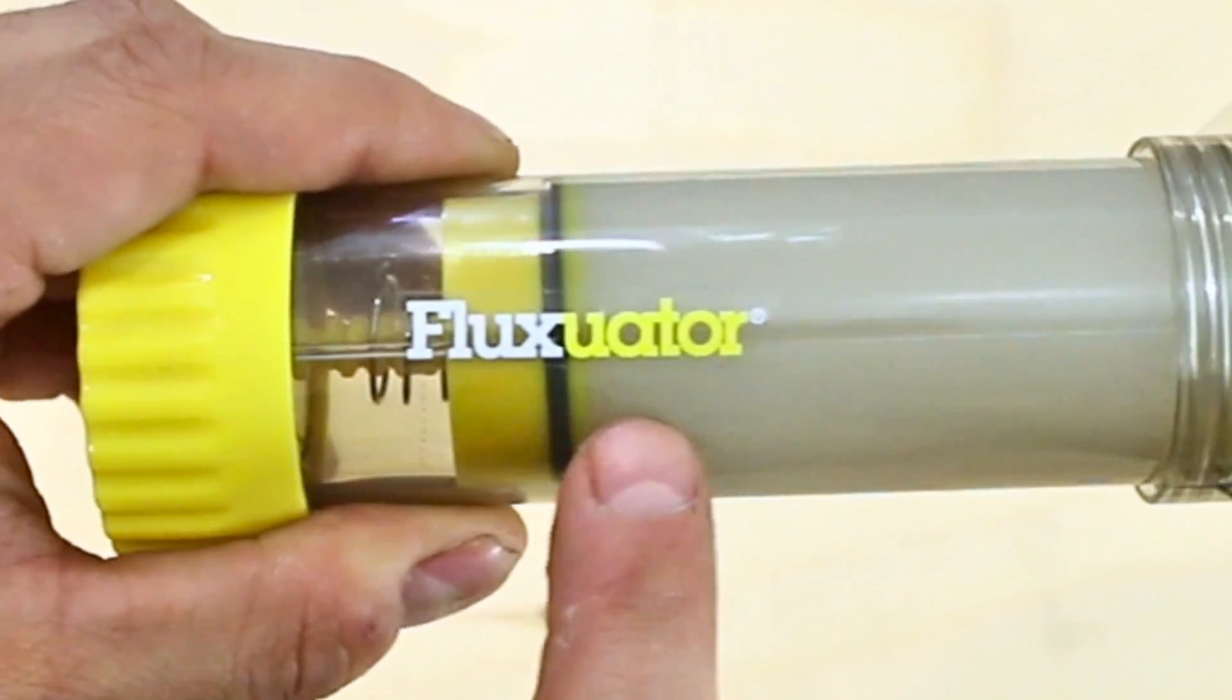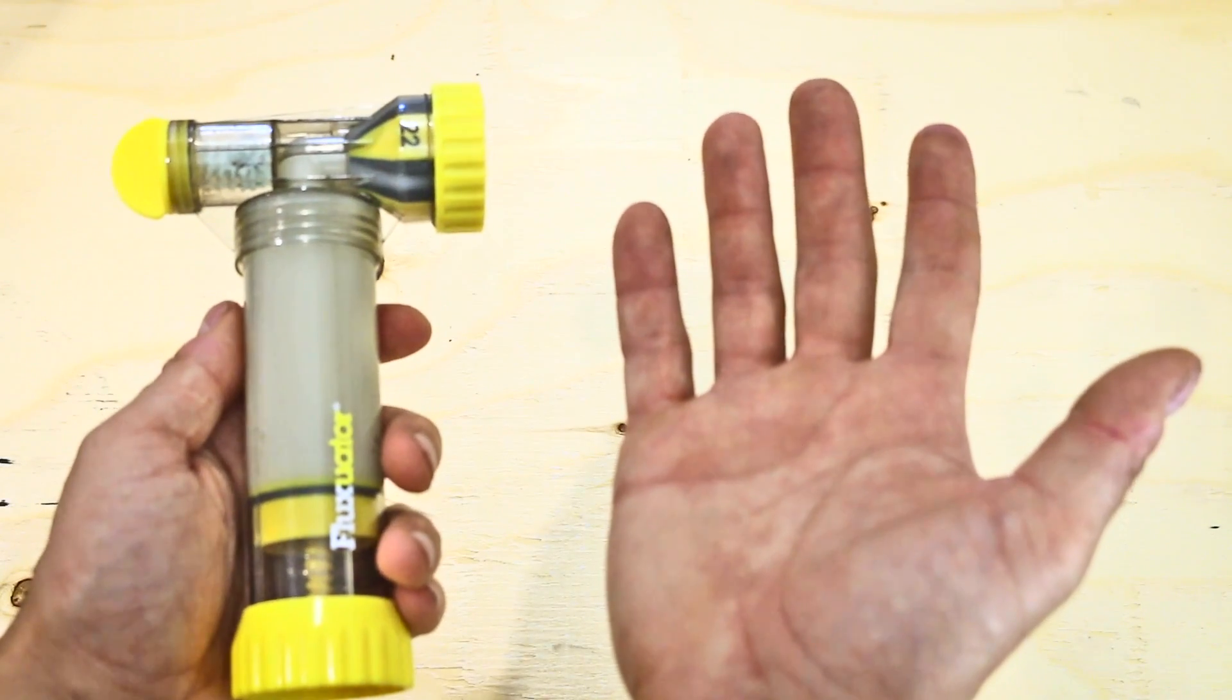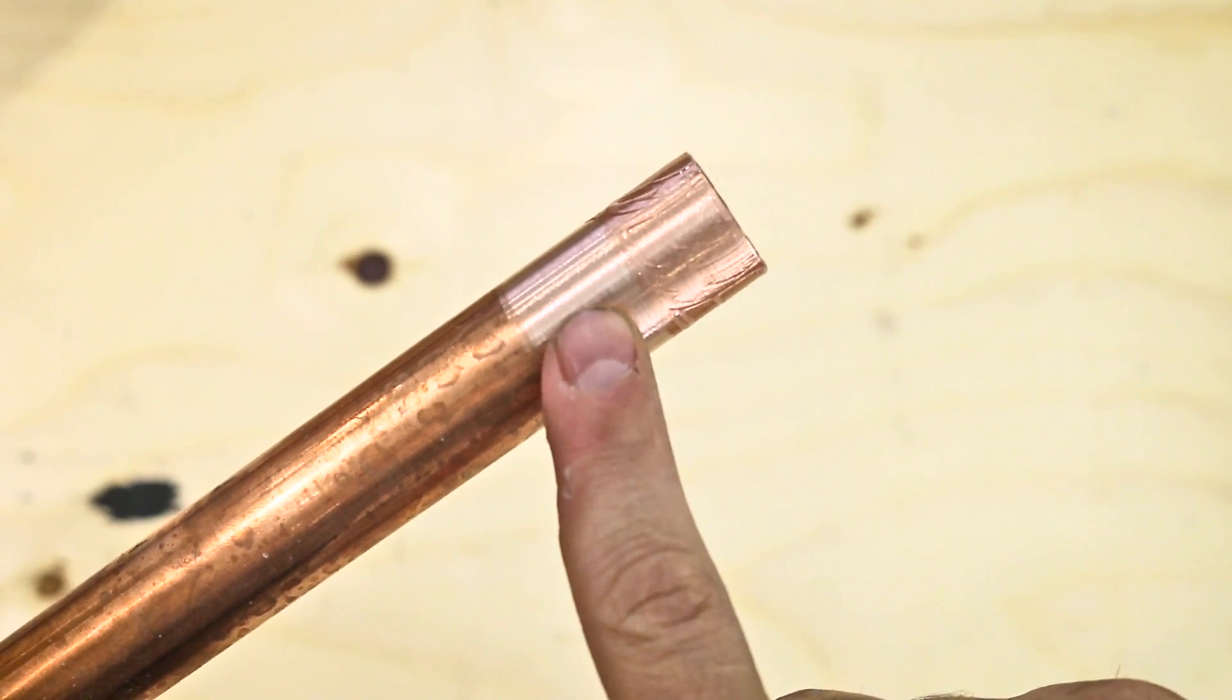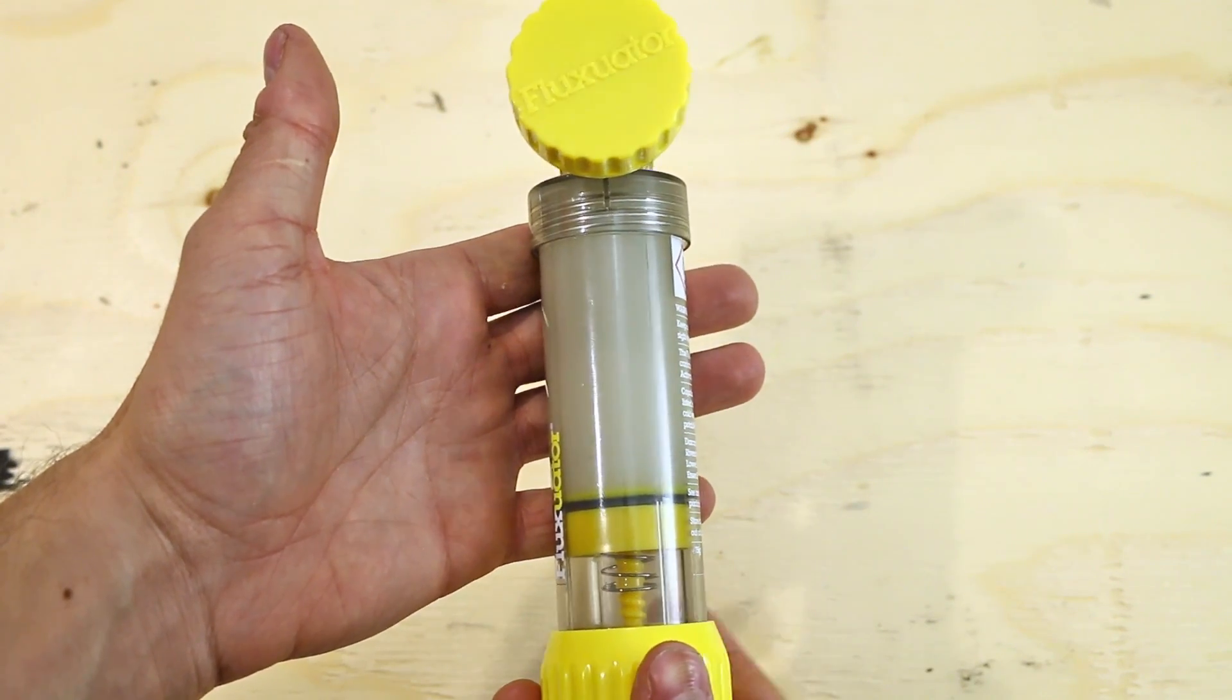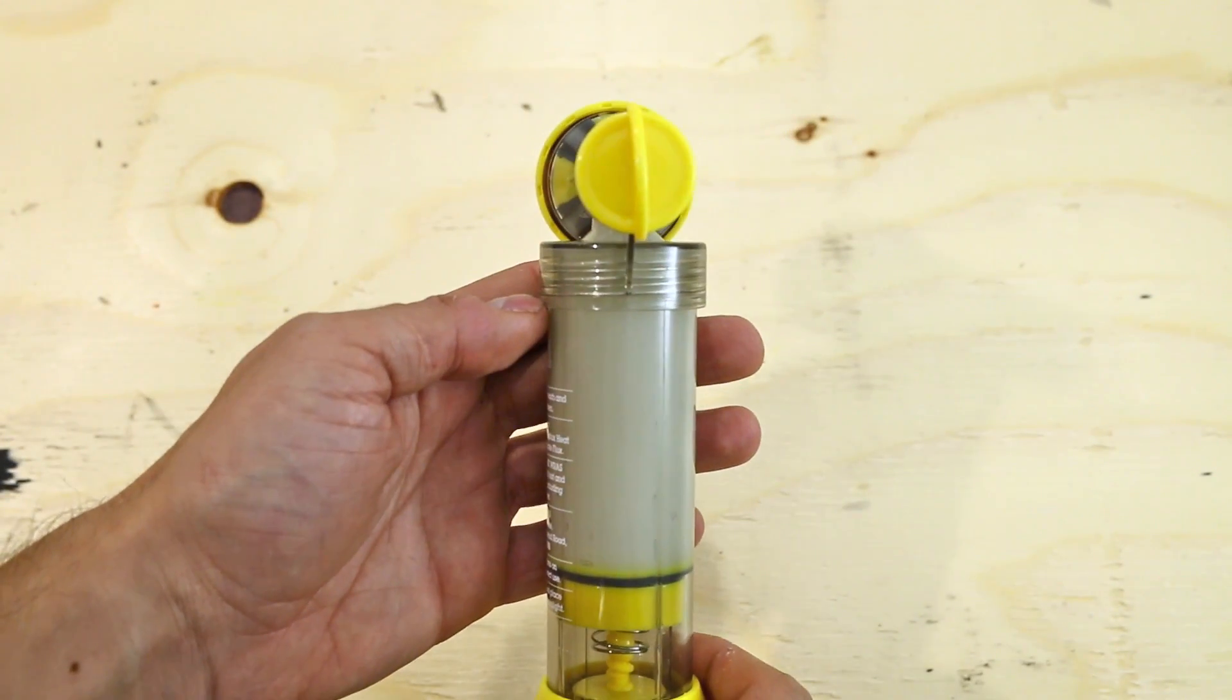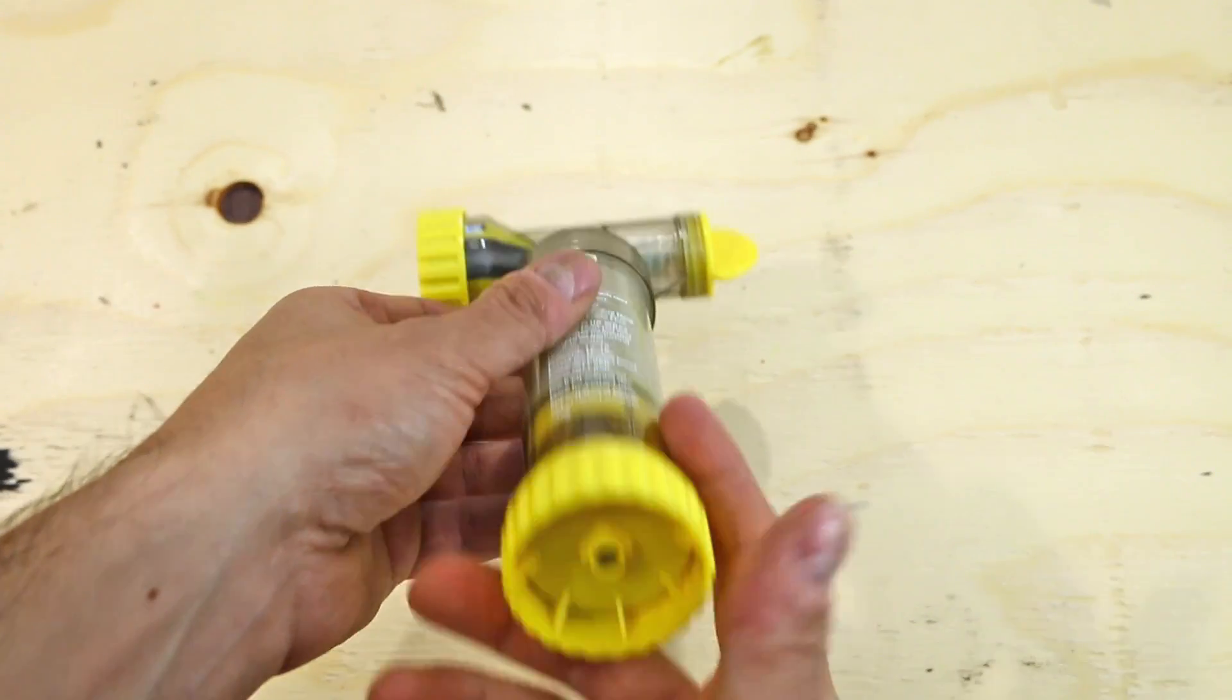I bet you guys heard about the Fluctuator. It's a fairly new product on the market that's designed to keep your hands and the flux that you use on copper pipes separate. In other words, the Fluctuator is a flux dispenser that dispenses the right amount of flux for both half inch and three-quarter inch pipes while keeping everything enclosed and free of contaminants.